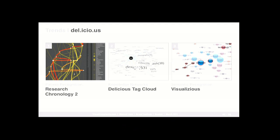Delicious is a social bookmarking system that makes it really easy to save a bookmark or a particular website you enjoyed. But when you actually need to retrieve that information at a given moment, it's really hard — especially if you're messy with your tags. A lot of visualization efforts when it comes to mapping Delicious have been trying to solve that issue, trying to create visualization tools that allow you to retrieve information in a more straightforward manner, while also tracking patterns of usage and bookmarking.